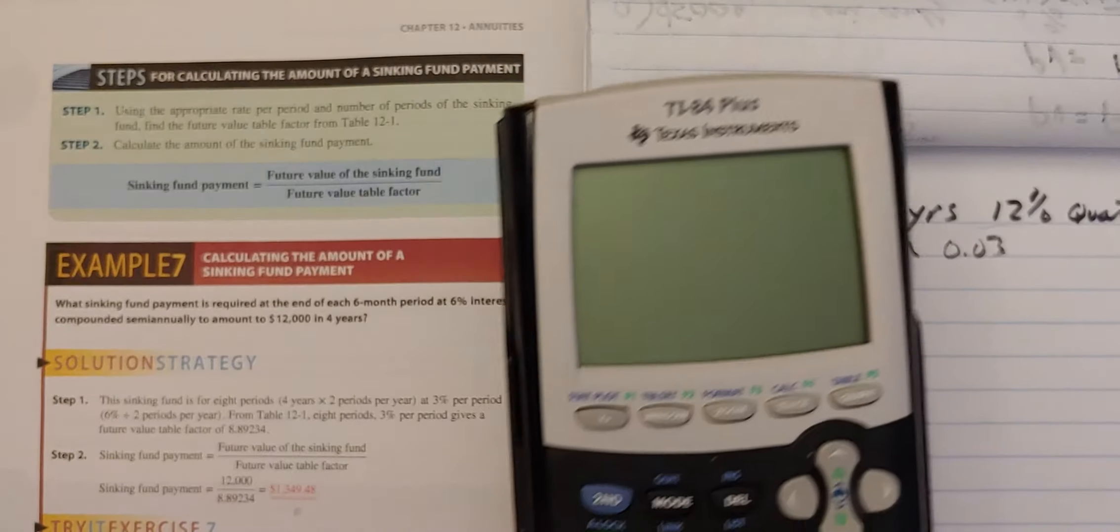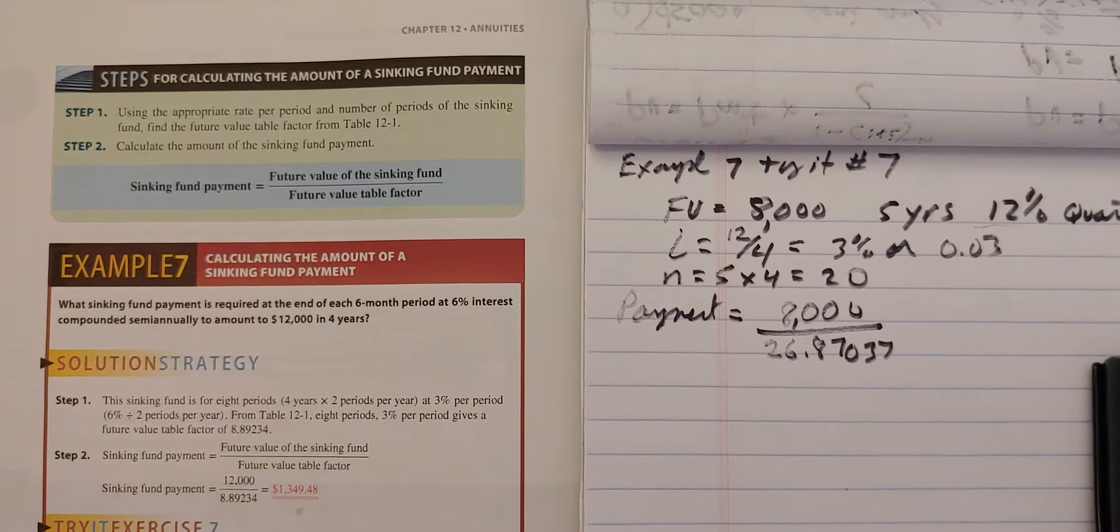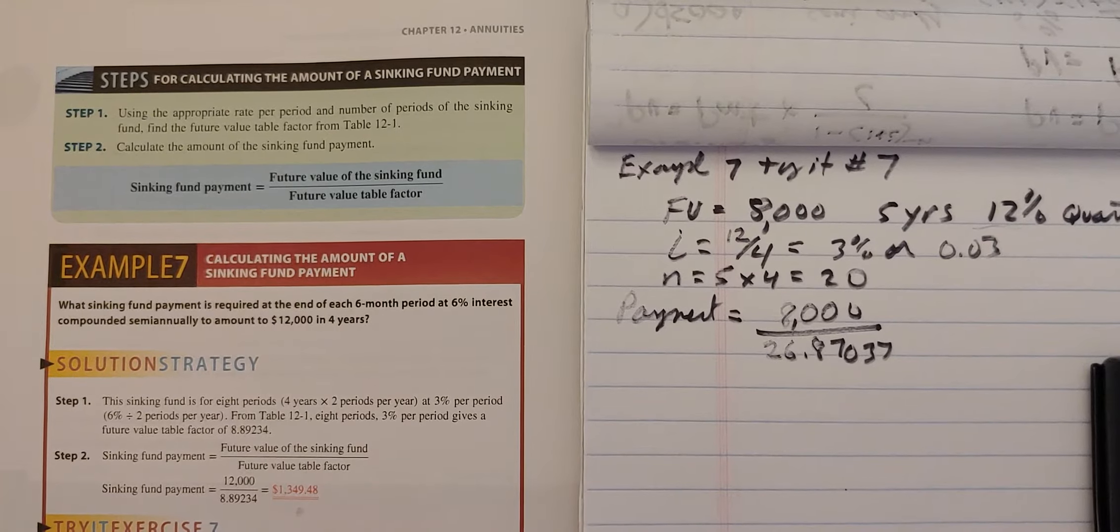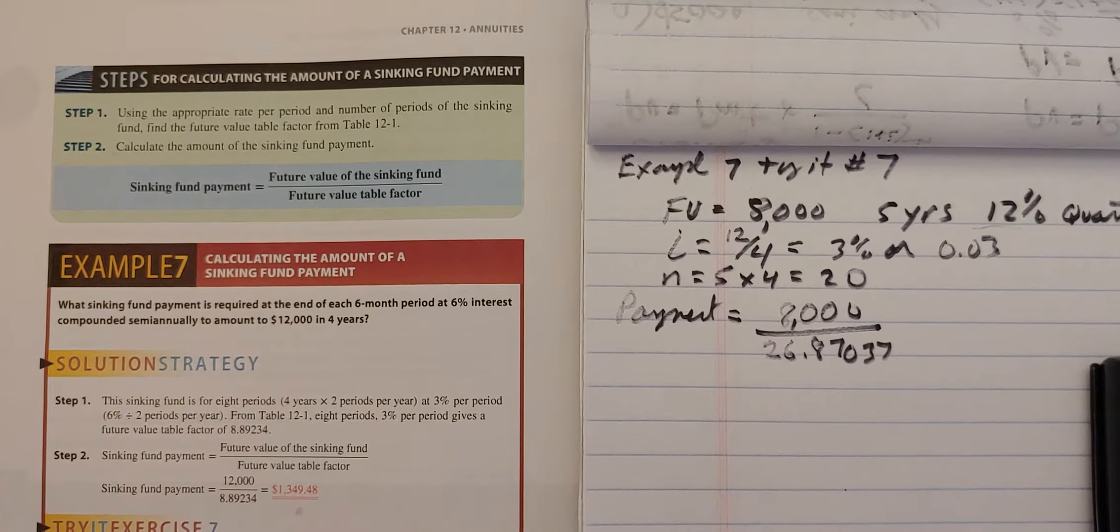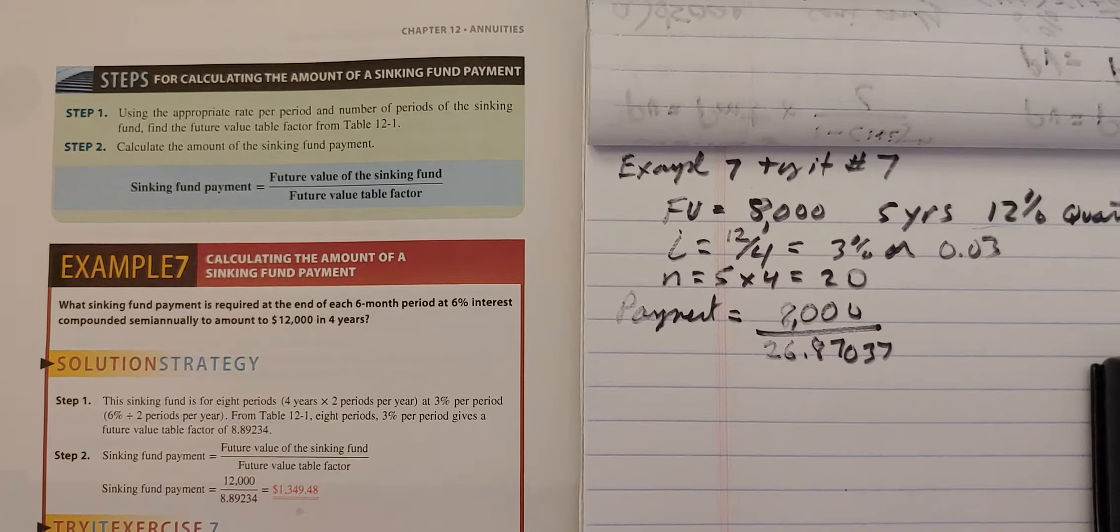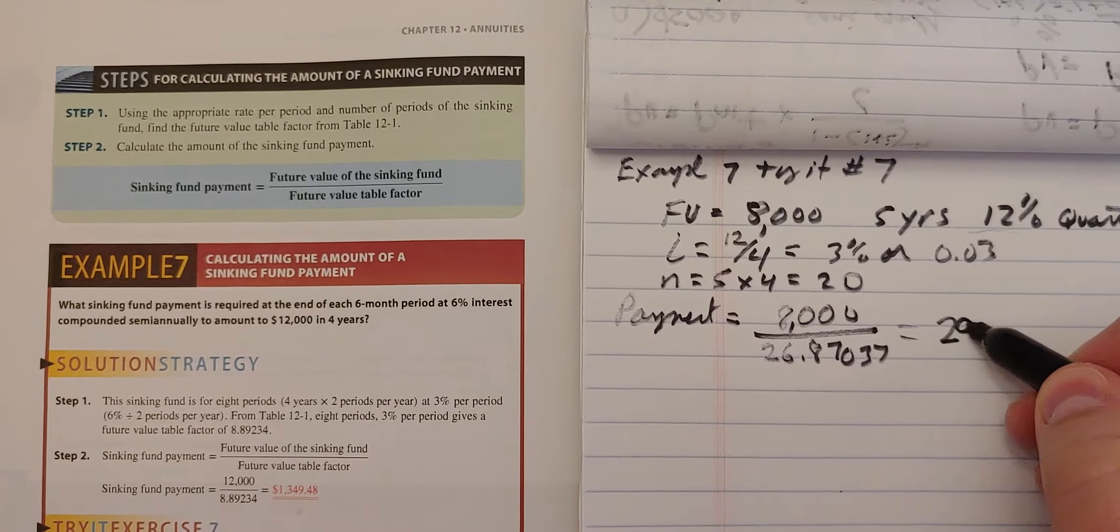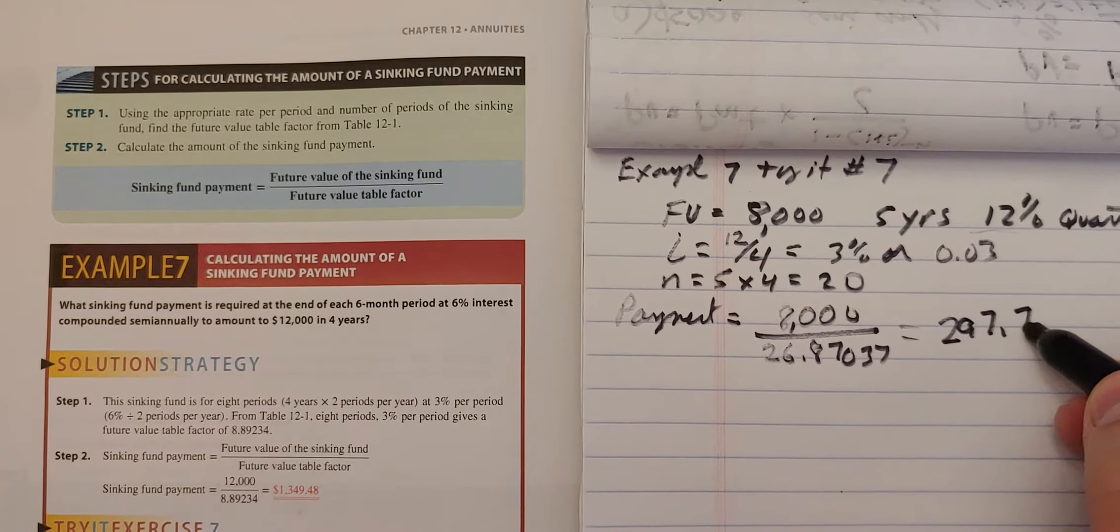So pull up my calculator. Thank you to my daughter who let me borrow it. Because I use either my phone, which I'm recording on, or my computer. So she let me borrow this. So 8,000 divided by 26.87037. And that equals $297.73.